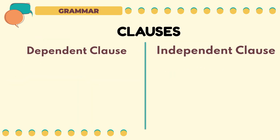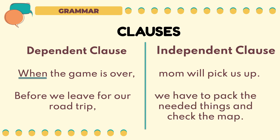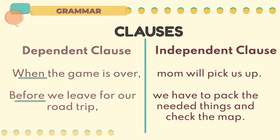The following sentences show the differences between dependent and independent clauses. 'When the game is over, mom will pick us up.' The clause 'when the game is over' starts with the subordinating conjunction 'when.' This clause has an incomplete thought when the independent clause is removed. However, 'mom will pick us up' does not need the dependent clause to have a complete thought. Next sentence: 'Before we leave for our road trip, we have to pack the needed things and check the map.' The clause 'before we leave for our road trip' starts with the subordinating conjunction 'before' and has an incomplete thought, while 'we have to pack the needed things and check the map' does not need the dependent clause to have a complete thought.